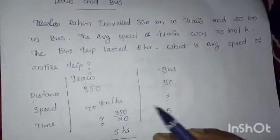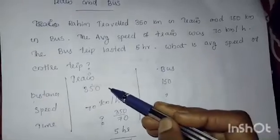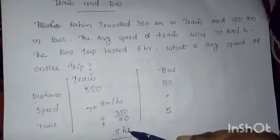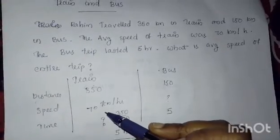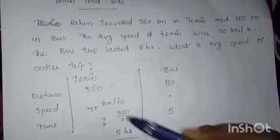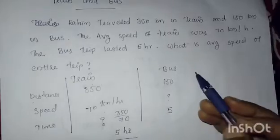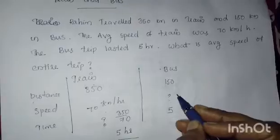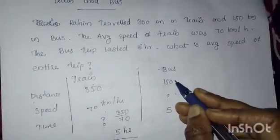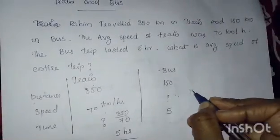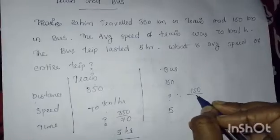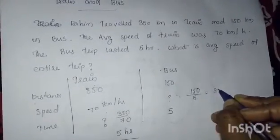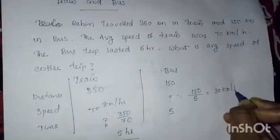So the train traveled 350 km in 5 hours at a speed of 70 km per hour. For the bus, we need to find the speed by dividing distance by time. The distance is 150 km and the time is 5 hours, so 150 divided by 5 gives us 30 km per hour.